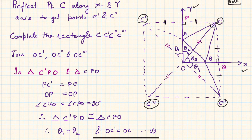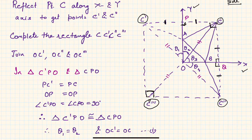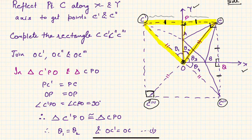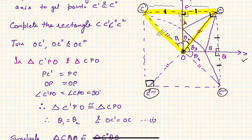Since CC' and CC'' are perpendicular, we can complete the rectangle. Now join OC', OC'', and OC'''. Consider the two triangles at point P: triangle OPC' and triangle OPC. They are congruent because PC' equals PC, the angle at P is 90 degrees, and OP is common. Therefore OC' equals OC, and angle θ₁ equals angle θ₂.